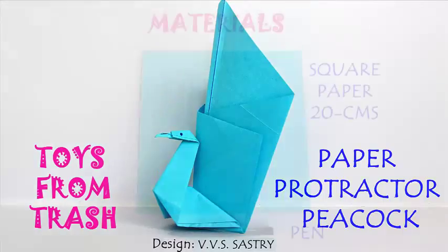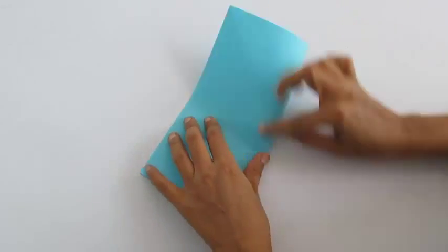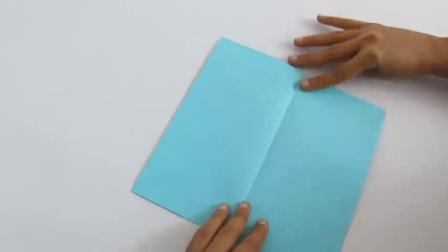So let's make this paper protractor peacock and we just need a square piece of paper. First we will fold it in half, bring one corner to the center line thereby folding a 60 degree angle.